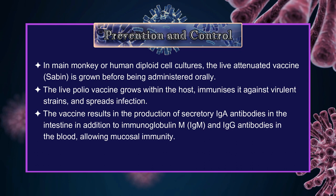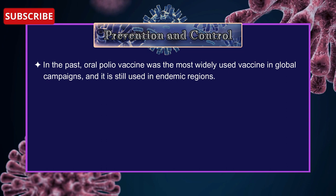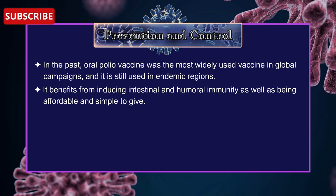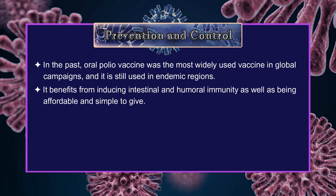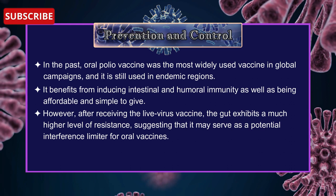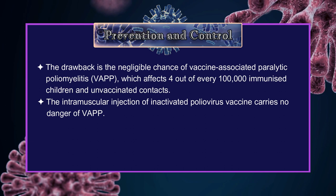Both live and killed viral vaccines produce antibodies and shield the central nervous system from future wild virus invasion. In the past, oral polio vaccine was the most widely used vaccine in global campaigns and is still used in endemic regions. Its benefit comes from inducing intestinal and humoral immunity, as well as being affordable and simple to administer. However, after receiving the live virus vaccine, the gut exhibits a higher level of resistance. The drawback is the negligible chance of vaccine-associated paralytic poliomyelitis, affecting 4 out of every 100,000 immunized children and unvaccinated contacts.